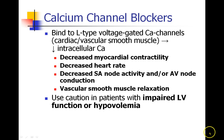Now we're going to move on to calcium channel blockers, a whole different category of medications. Calcium channel blockers bind to specific types of calcium channels located in your cardiac and vascular smooth muscle. When that happens, you have a decreased level of intracellular calcium, and this makes four specific things happen. In the heart, it decreases myocardial contractility. It decreases heart rate, and decreases activity in the SA node and AV node conduction. In vascular smooth muscle, they cause relaxation, which leads to vasodilation and a decrease in blood pressure.